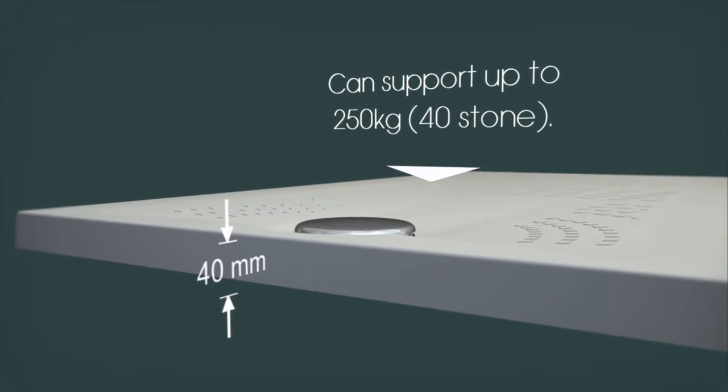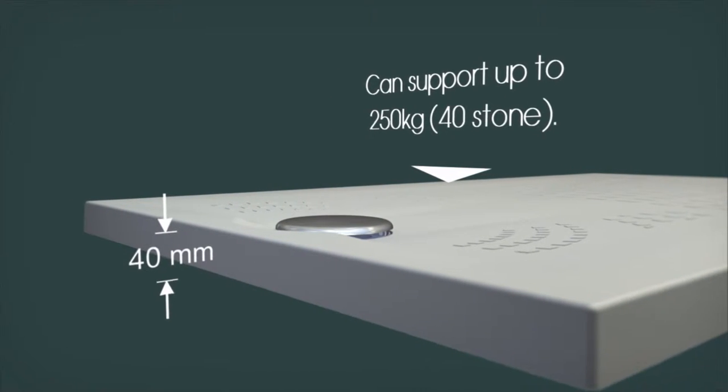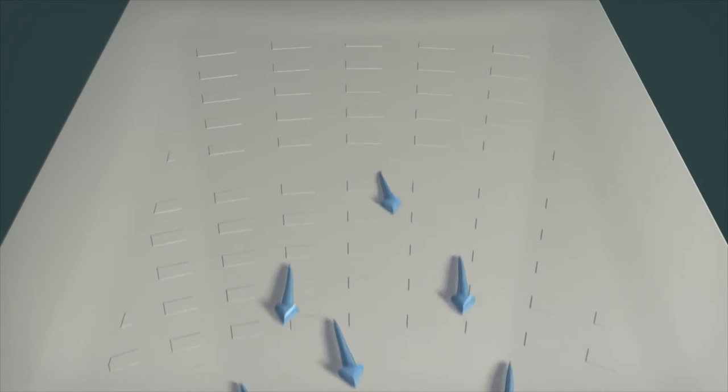At 40mm high and with optional ramps, it is low enough to offer easy access to those with limited mobility into the showering area. The tray features a unique water channelling tread pattern.